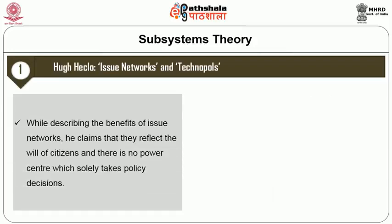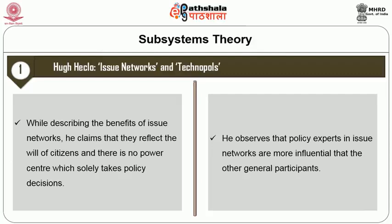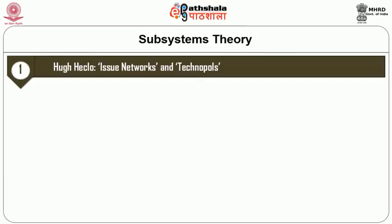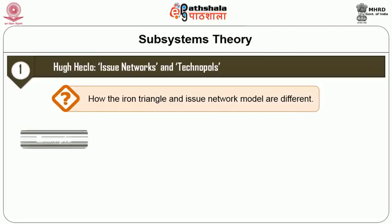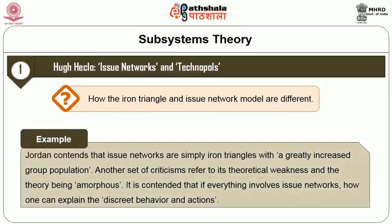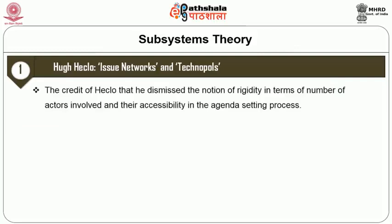This poses a dilemma in Heclo's theory. On one hand, while describing the benefits of issue networks, he claims that they reflect the will of citizens and there is no power center which solely takes policy decisions. On the other hand, he observes that policy experts in issue networks are more influential than the general participants. Jordan contends that issue networks are simply iron triangles with a greatly increased group population. Another set of criticisms refer to its theoretical weakness and the theory being amorphous — if everything involves issue networks, how can one explain discrete behavior and actions. Despite criticisms, it is to the credit of Heclo that he dismissed the notion of rigidity in terms of number of actors involved and their accessibility in the agenda setting process.